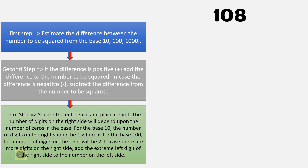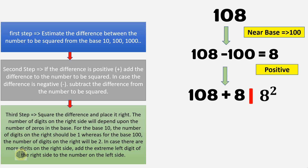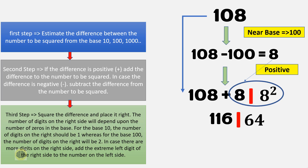Let's find the square of 108. The base nearer to 108 is 100. The difference is 108 minus 100, which equals 8. Since the difference is positive, add the difference to the number to be squared — this becomes the left part of the solution. Square the difference and place it on the right. Since the base is 100, there should be 2 digits on the right. Combining the numbers, the square of 108 is 11664.